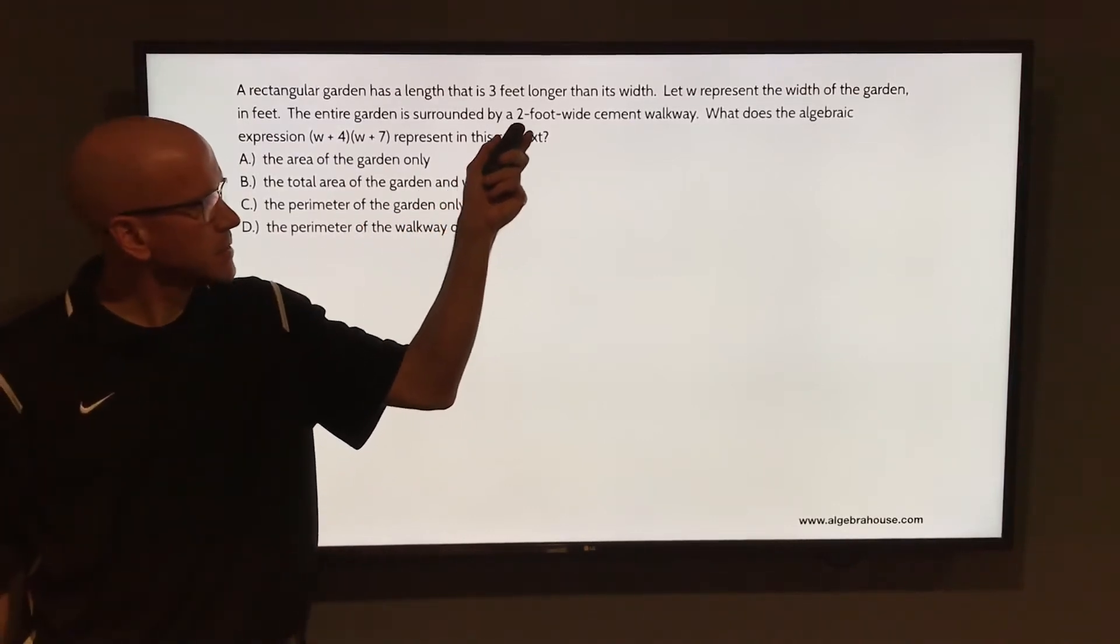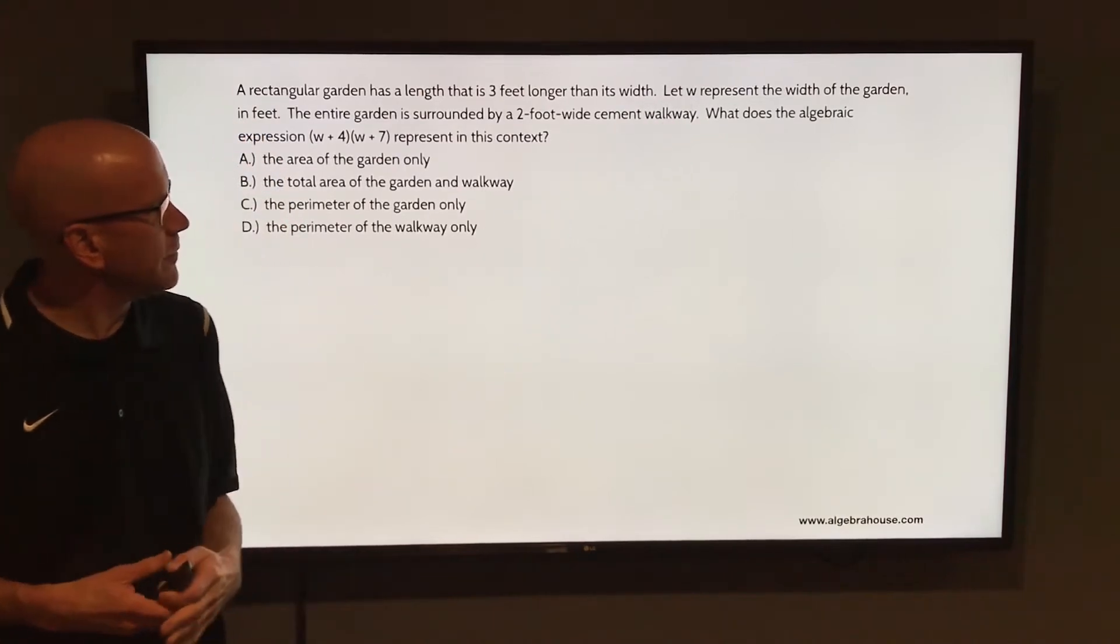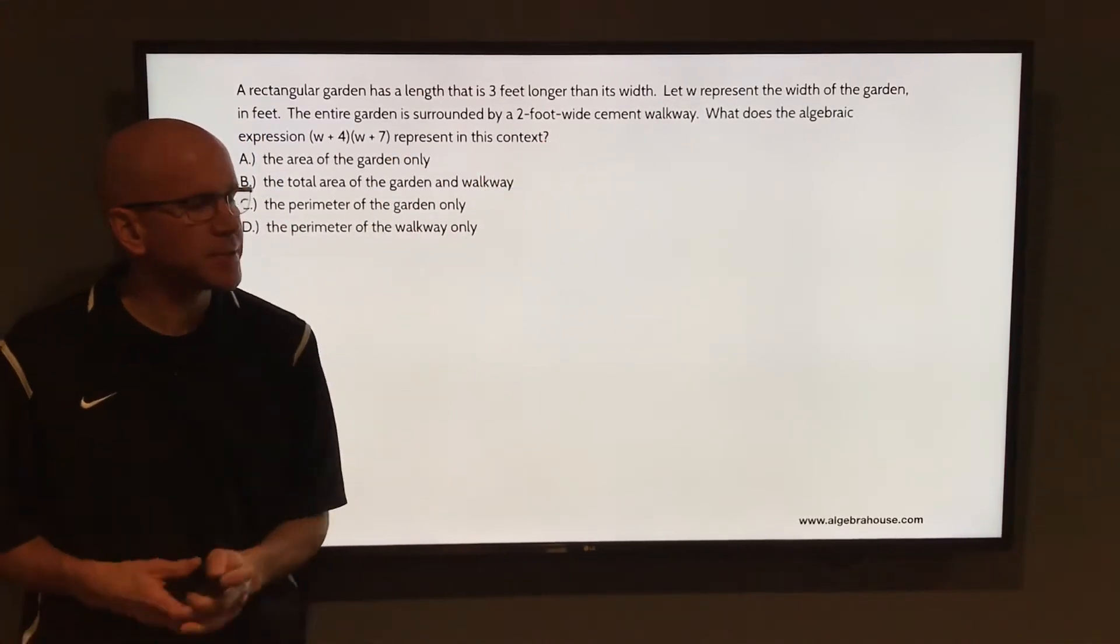A rectangular garden has a length that is three feet longer than its width. Let W represent the width of the garden in feet. The entire garden is surrounded by a two-foot wide cement walkway.